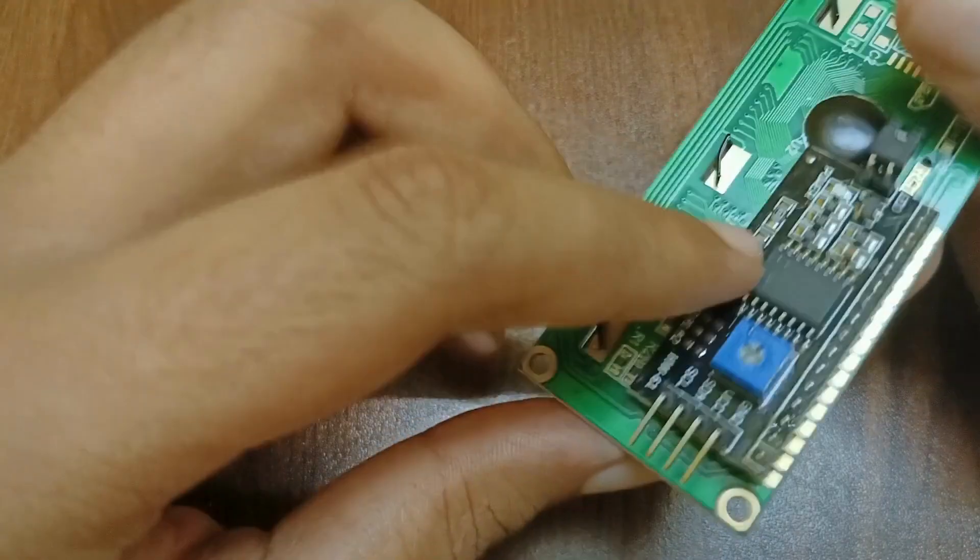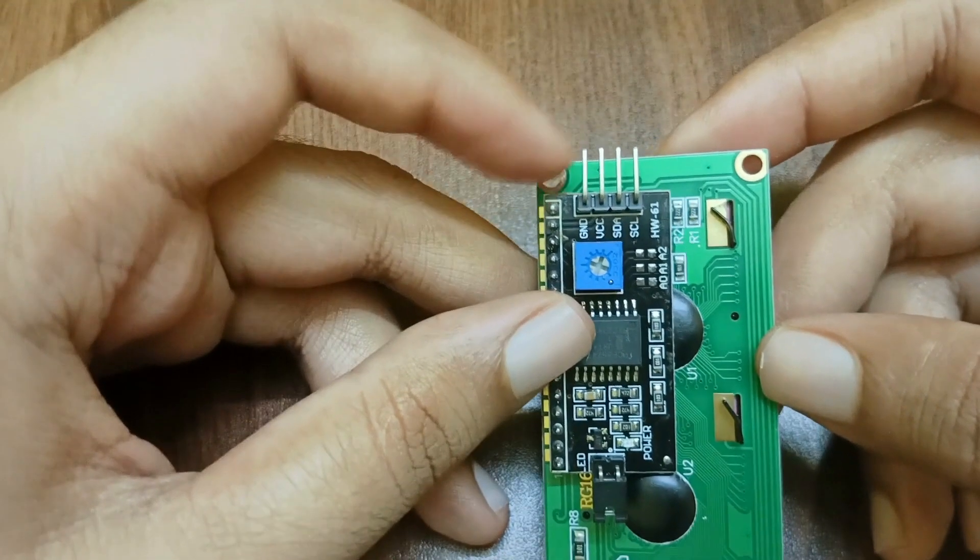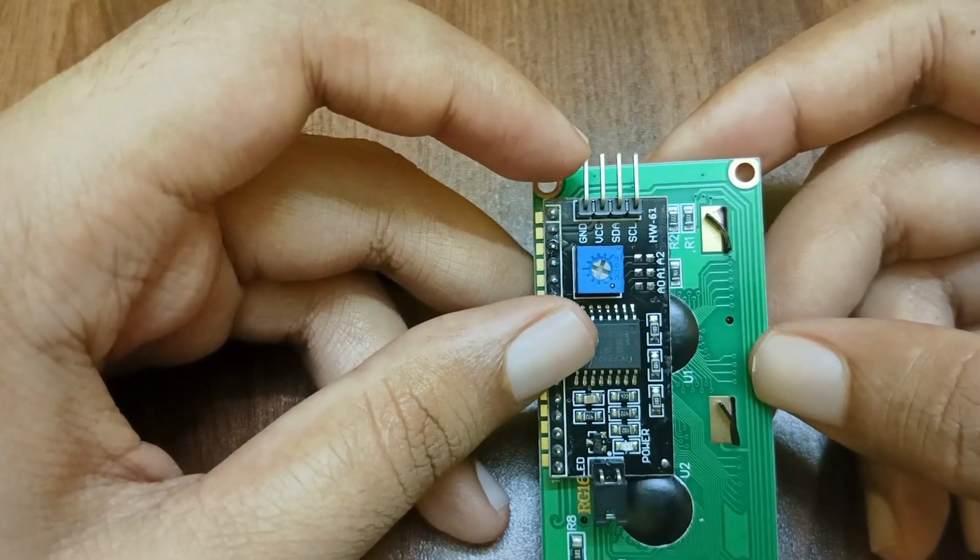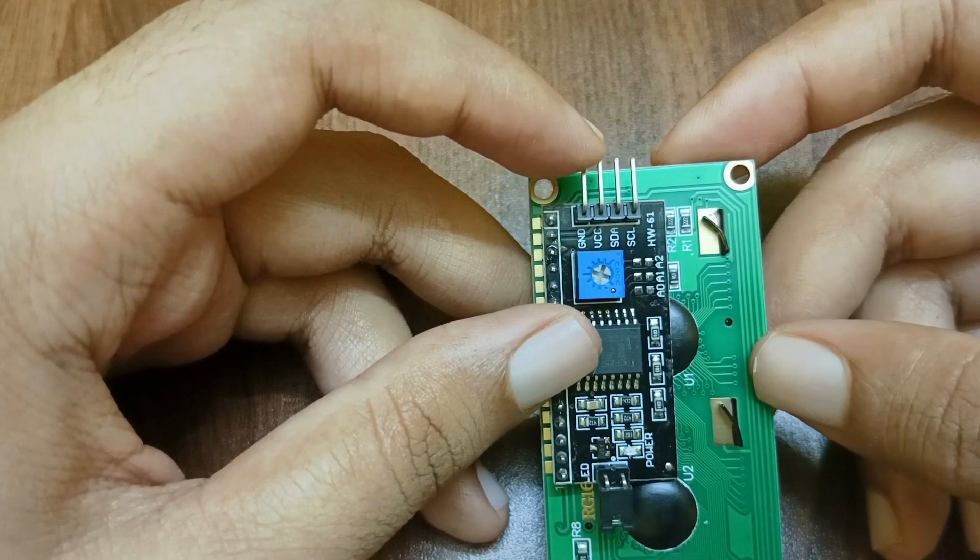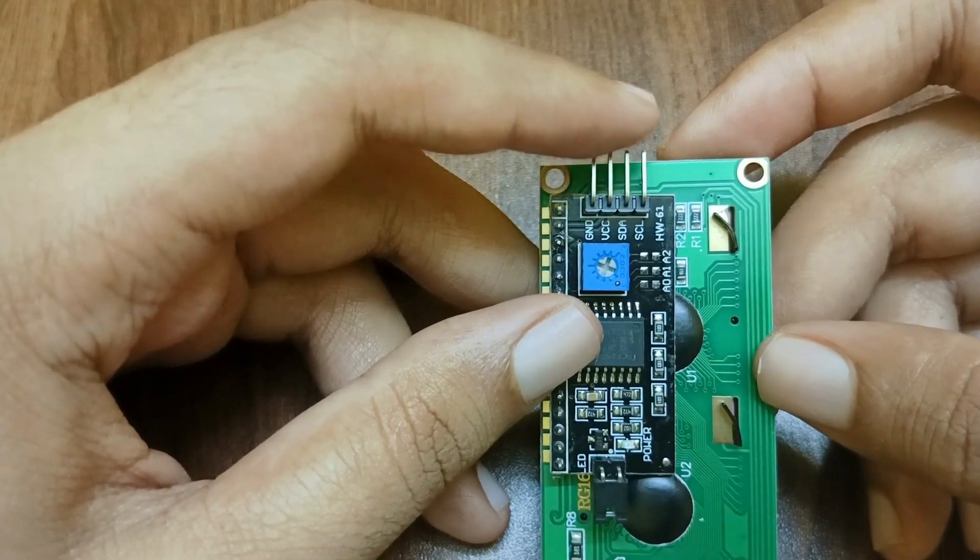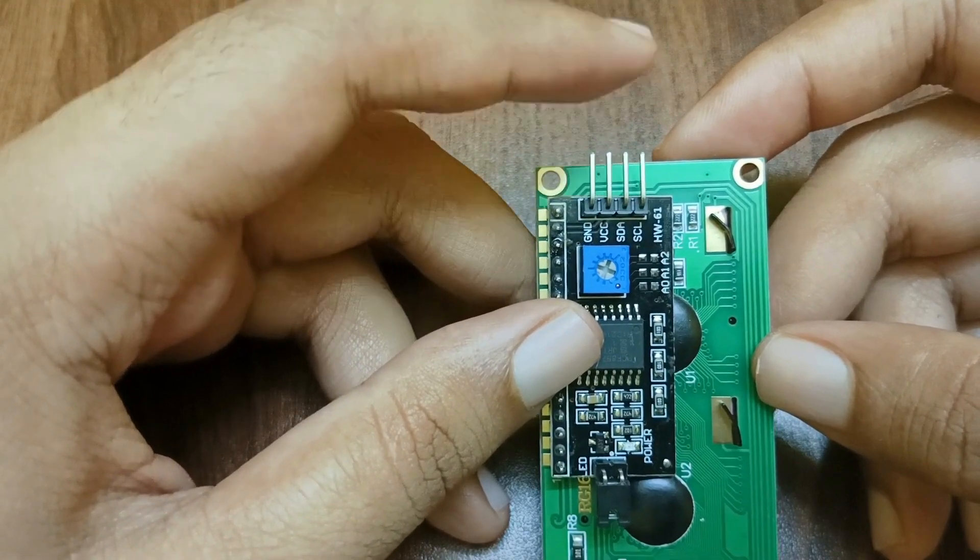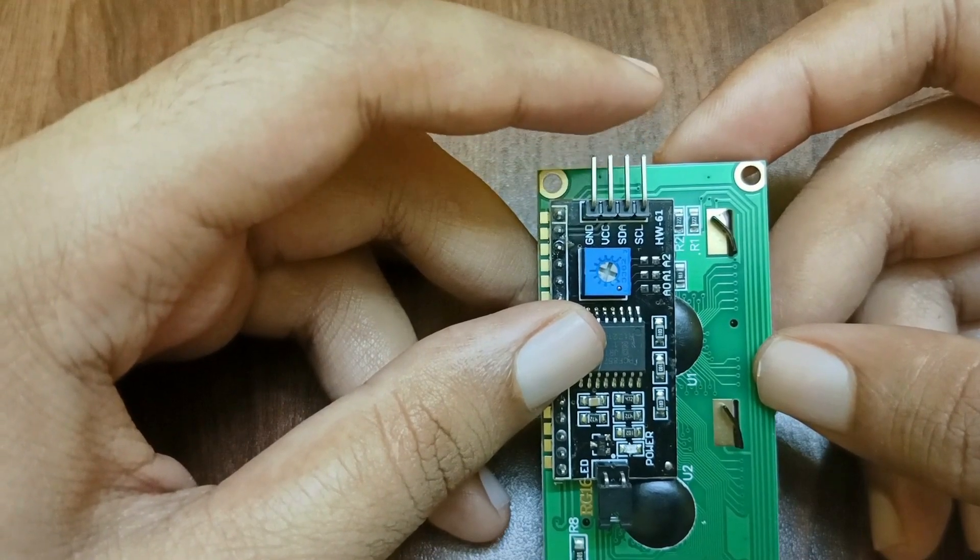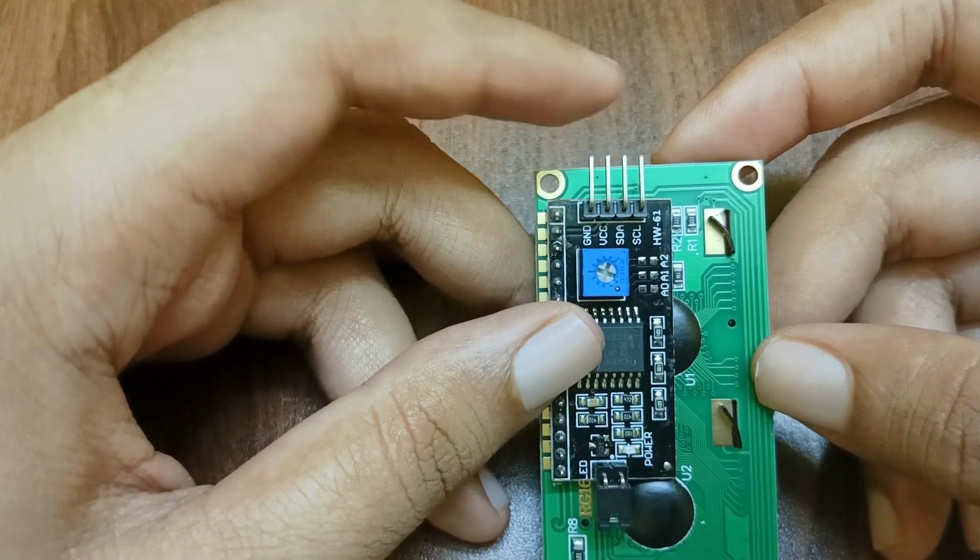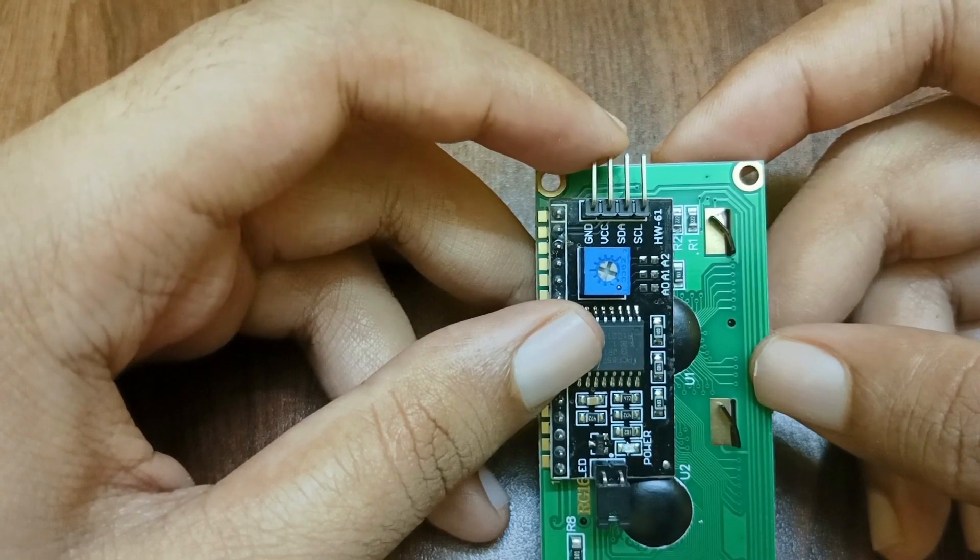So it has four pins as output. First is the ground that we will connect to the ground. Second is VCC, that is power, and third one is the SDA, and fourth one is the SCL. We will connect SDA and SCL to their respective pins on the microcontroller.